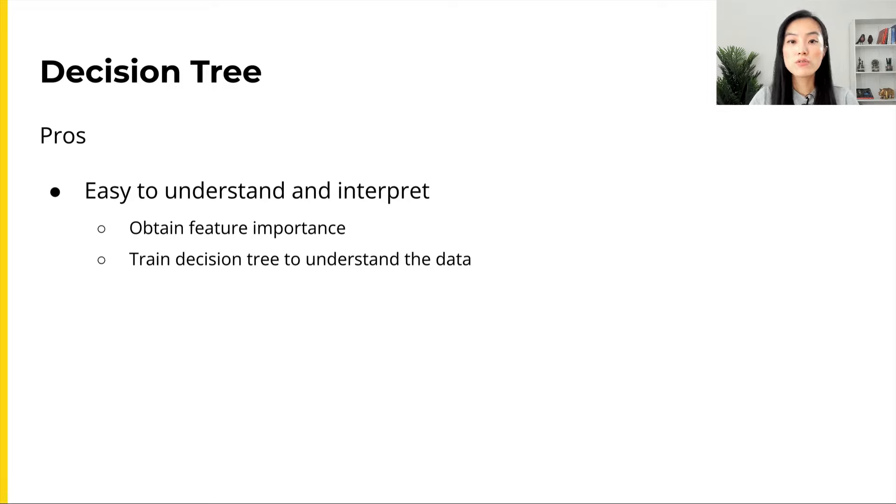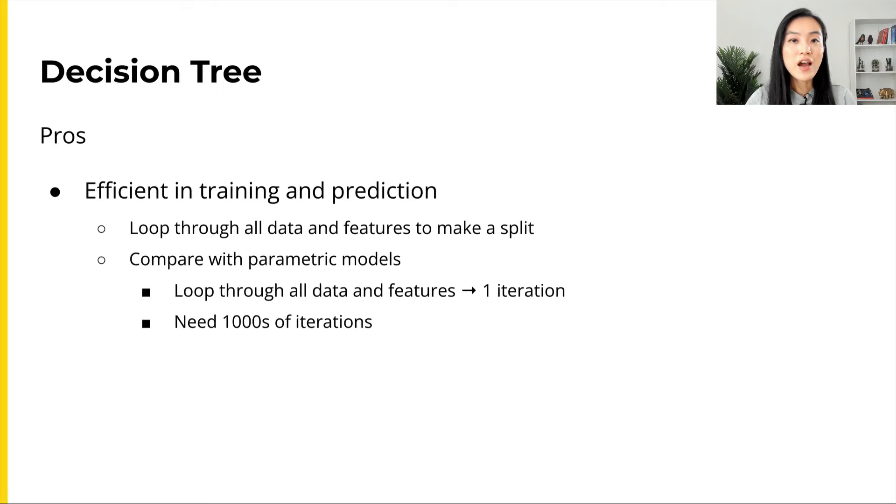Features that are used for splitting earlier or more often are considered to be more important. For this reason, we can start out with training a decision tree model on the data set to understand the data, even if we want to use other models for prediction later on.